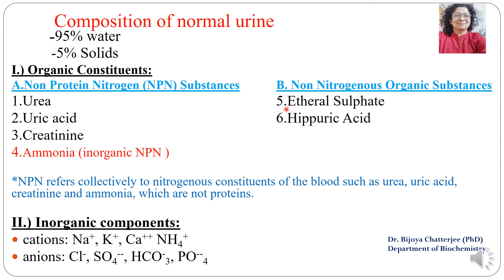Among the other organic substances which are normal constituents of urine are ethereal sulfate and hippuric acid. The inorganic components include both cations and anions. Among the cations: sodium, potassium, calcium and ammonium ions. The anions include chloride, sulfate, bicarbonate and phosphate ions.